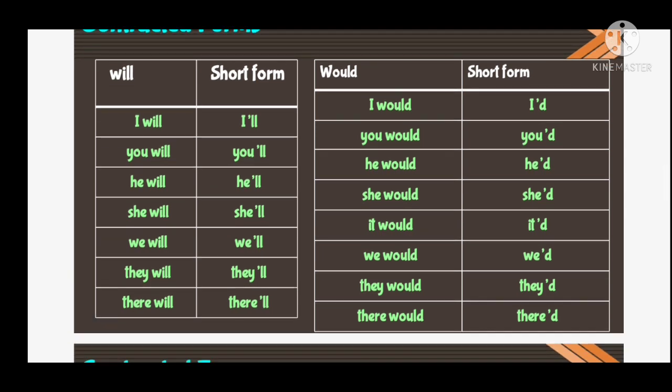Now by using 'would': 'I would' — short form is 'I'd', I apostrophe d. 'You would' — short form is 'you'd', you apostrophe d. 'He would' — short form is 'he'd', he apostrophe d. 'She would' — short form is 'she'd', she apostrophe d. 'It would' — short form is 'it'd', it apostrophe d. 'We would' — short form is 'we'd'. 'They would' — short form is 'they'd'. 'There would' — short form is 'there'd'.